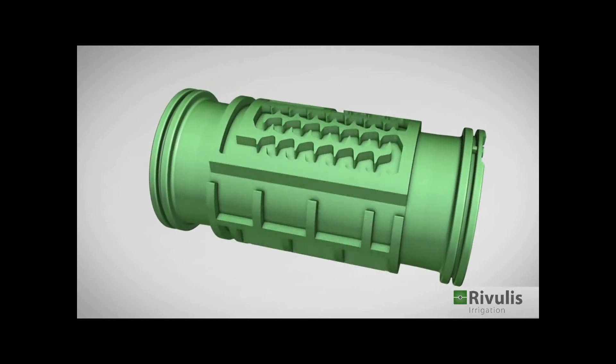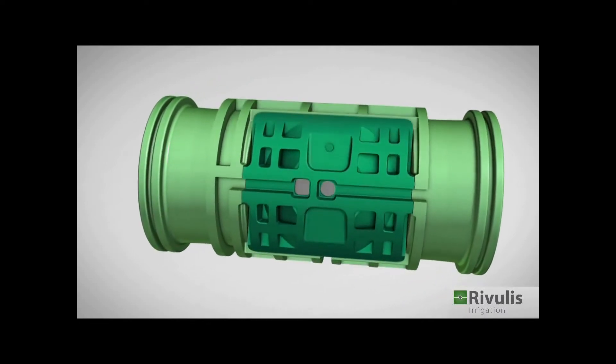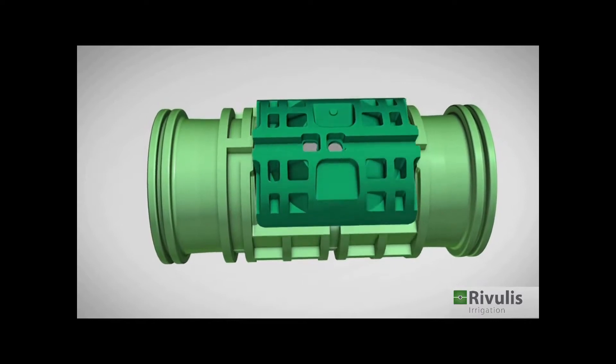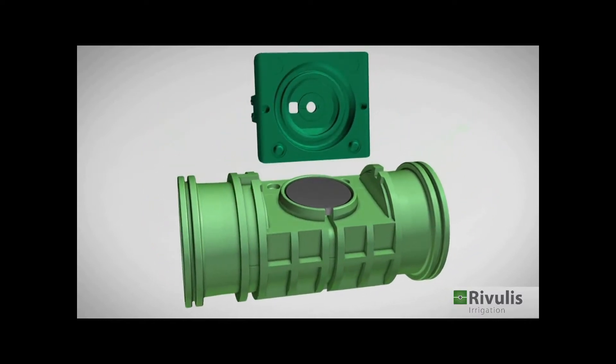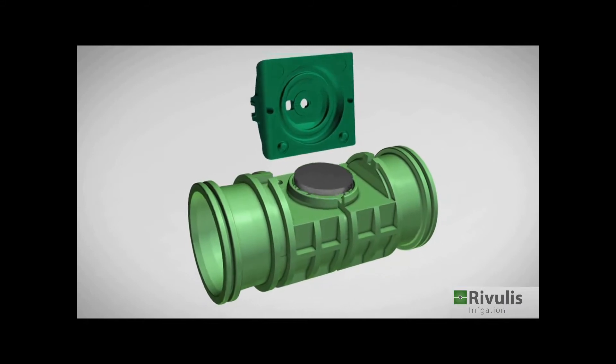The Hydro PC is a flow regulating dripper made up of three parts: the dripper body, the top cover, and the flow regulating diaphragm.